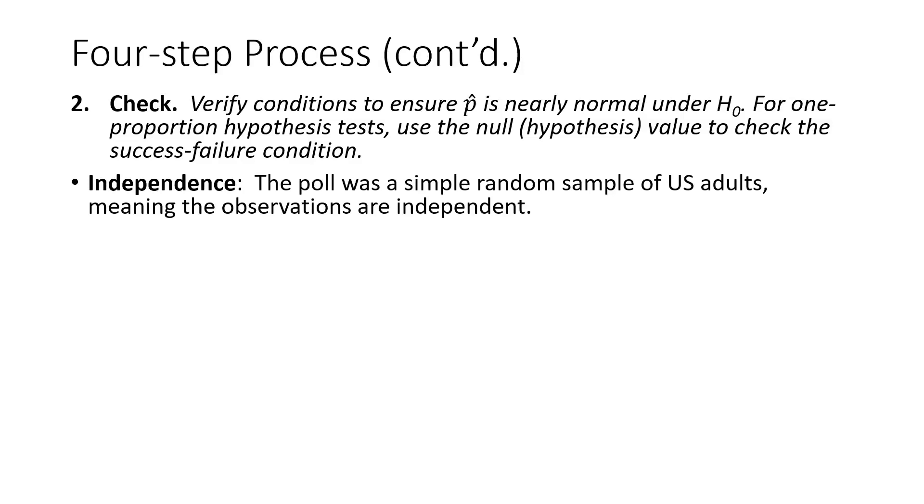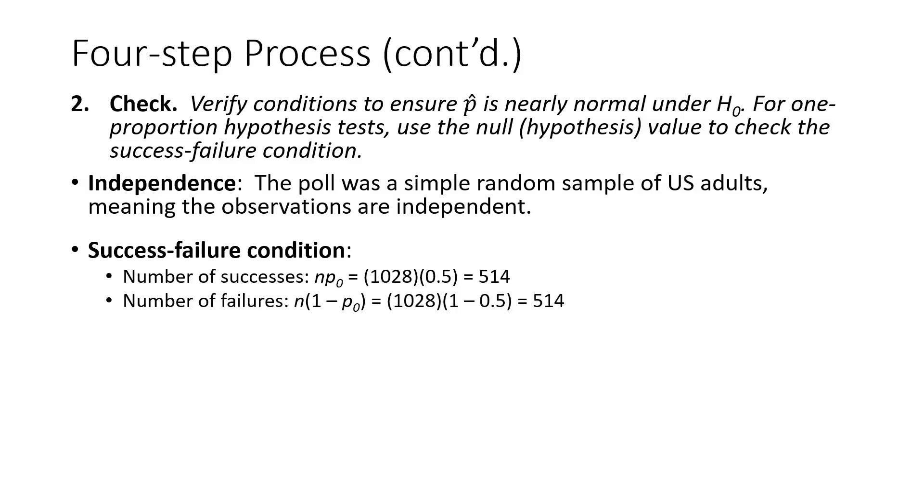Checking independence first, the poll was a simple random sample of U.S. adults, meaning the observations are independent. Moving on to the success-failure condition, we first find that the number of successes is equal to n times the null value P₀, and we get a value of 514. The number of failures is n times 1 minus P₀, the null value again, and we find that the number of failures was 514.